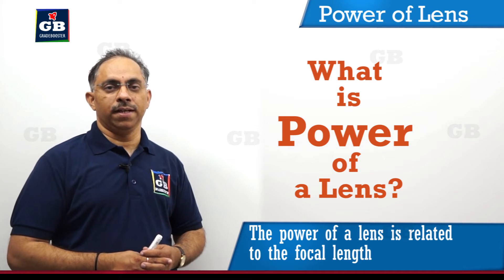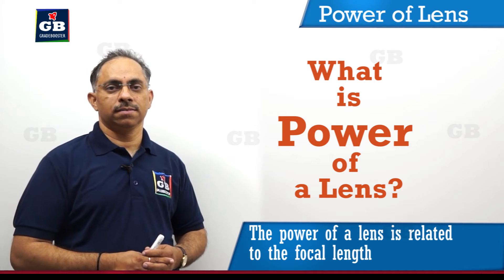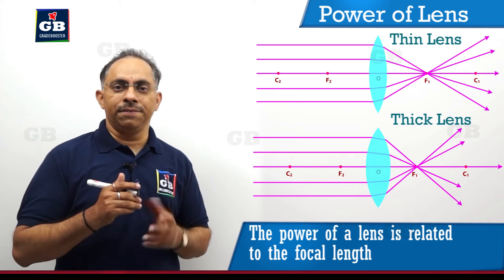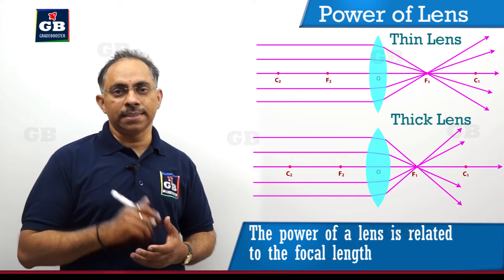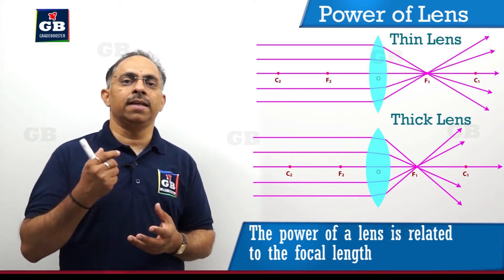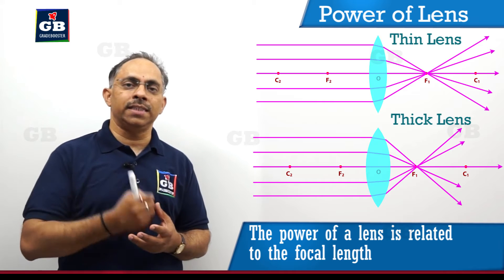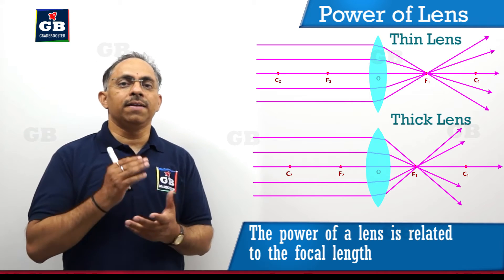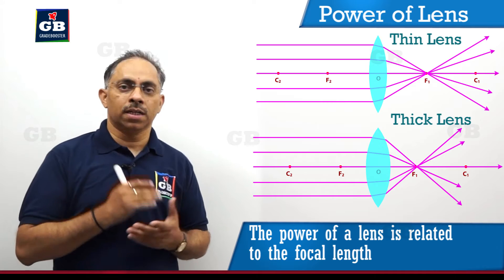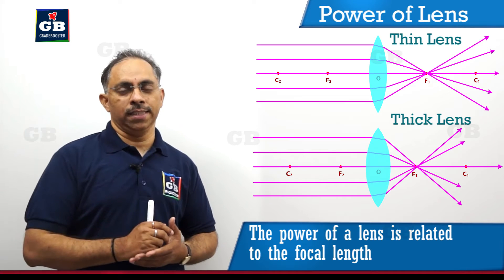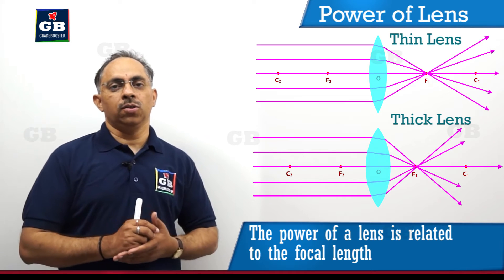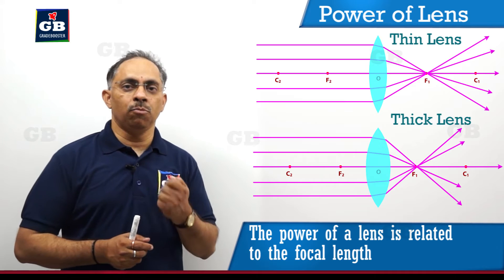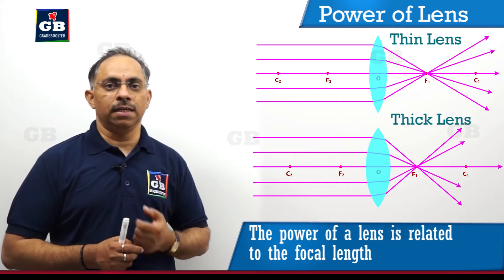We will now discuss the power of a lens. What do we mean by the power of a lens? You would have observed different lenses of different thicknesses. The converging capacity of a thinner lens is not the same as that of a thicker lens. A thicker lens will converge more compared to a thinner convex lens, so the thicker one is having more power compared to the thinner one.